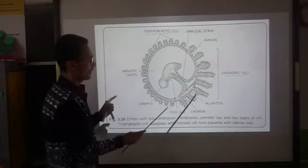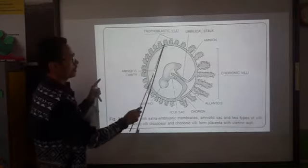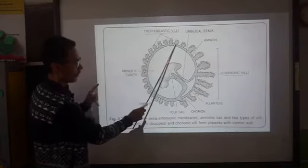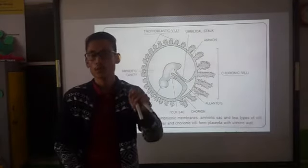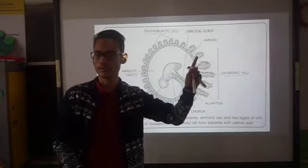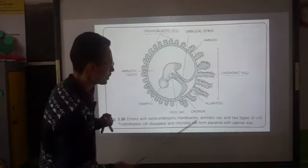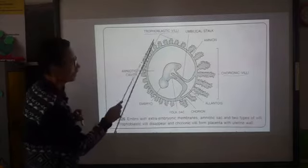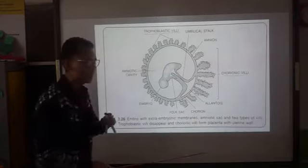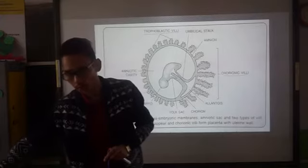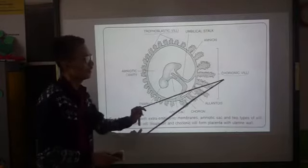The trophoblastic villi and the chorionic villi are produced from the trophectoderm or trophoblast — structures we covered in previous classes. From the trophectoderm, the formation of chorionic villi and trophoblastic villi occurs. Chorionic villi will help in the formation of the placenta, so kindly remember these two structures.